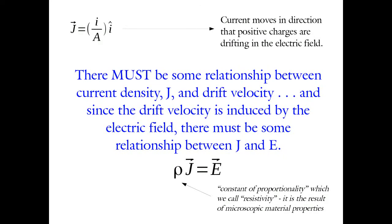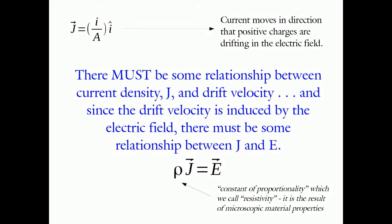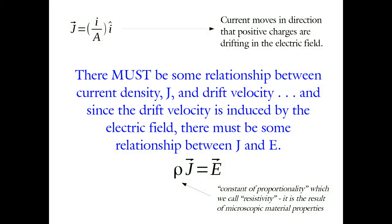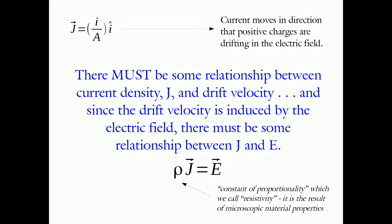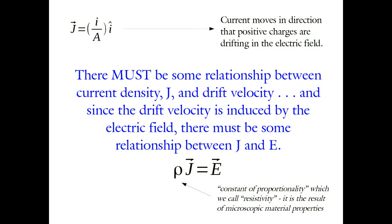You could change your material — put the same electric field on a material that offers less resistance to electric current, and that would allow you to set up a bigger current density. So there must be some relationship: the electric field equals some constant of proportionality times J. Since J is in amps per unit area and E is in newtons per coulomb, we have to figure out this proportionality constant for each material. This is the Greek letter rho — the resistivity of the material.